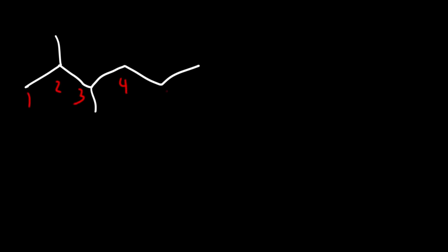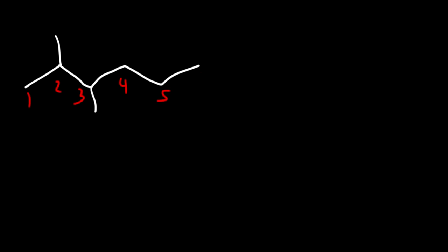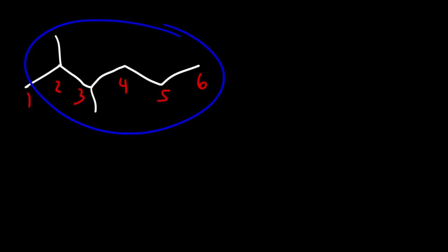Now what about this example? We need to number it from left to right rather than right to left, because we want the substituents to be two and three instead of four and five if we counted in this direction. So two and three are lower than four and five, so we're going to use this direction.